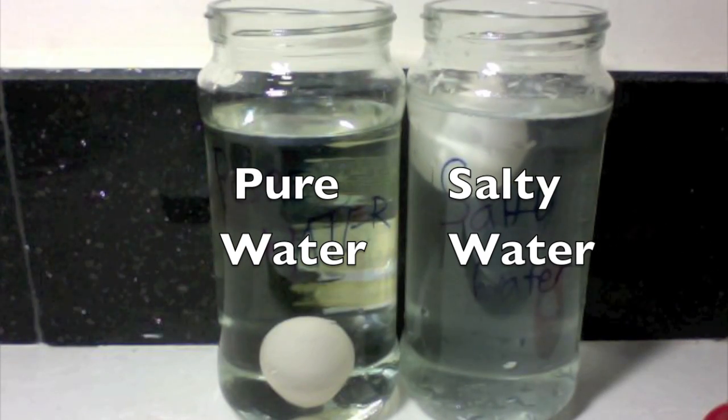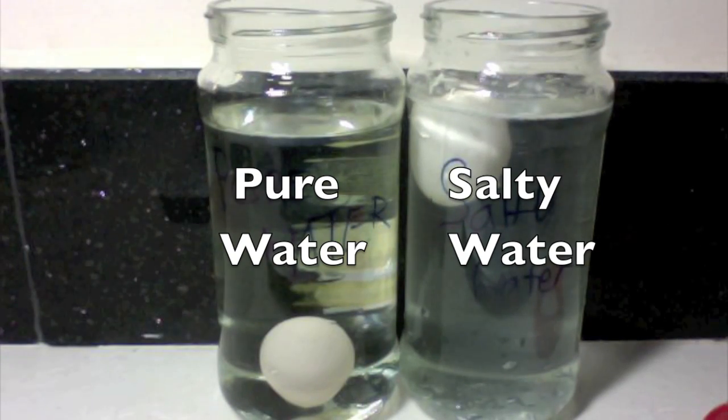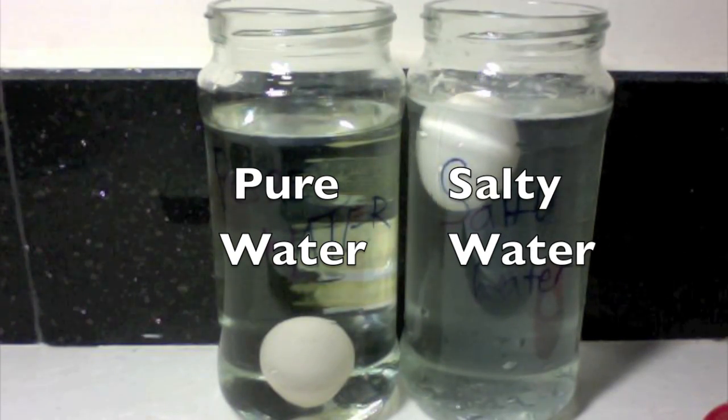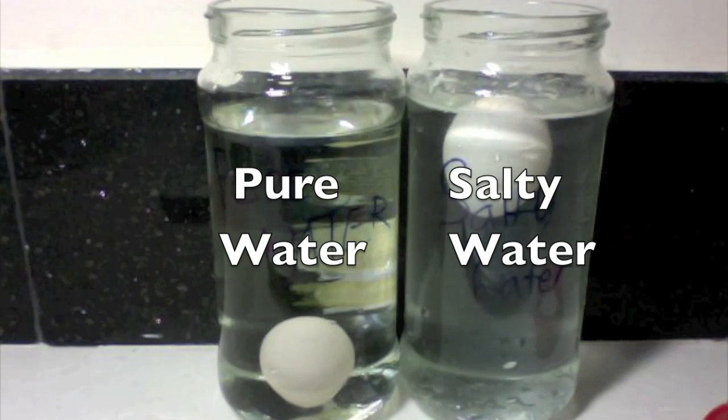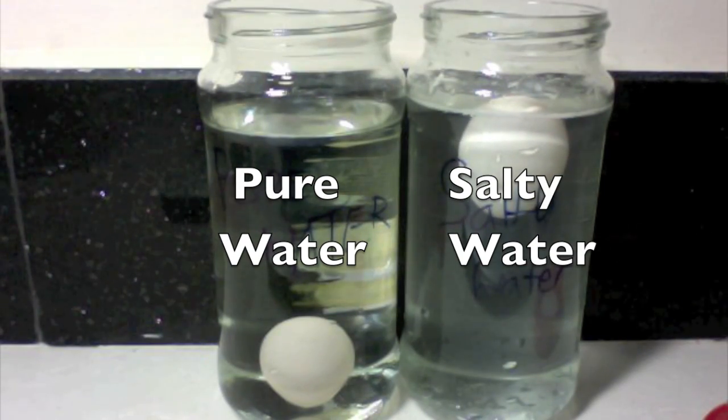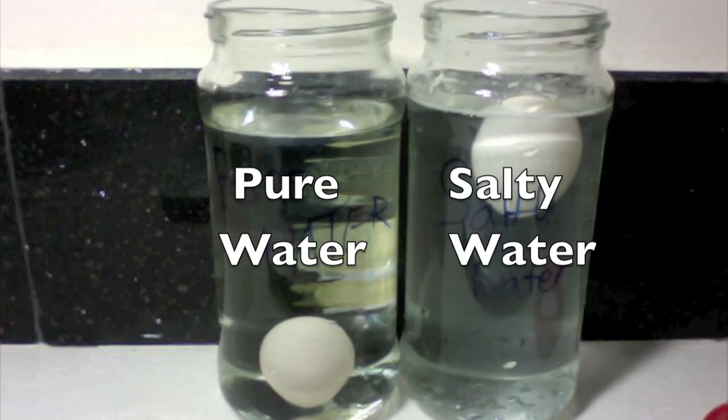So this shows that objects of the same volume feel different buoyancy forces in each liquid. This is because each liquid has a different density, and buoyancy force depends on the density of the liquid.